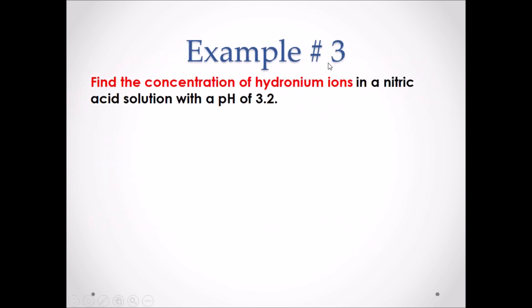Example number 3: find the concentration of hydronium ions in a nitric acid solution with a pH of 3.2. Pause the video and attempt this example.